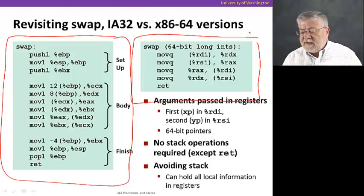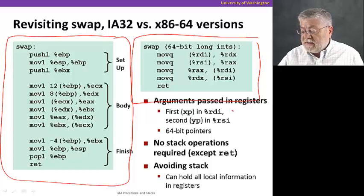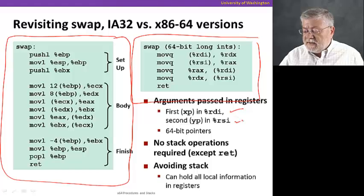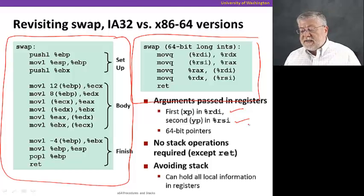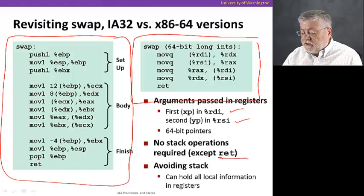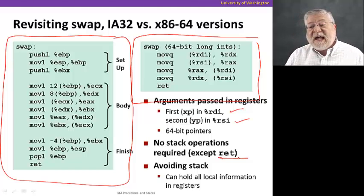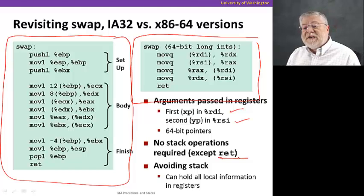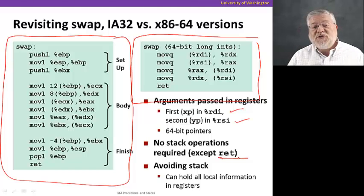The differences in these two cases are that arguments are passed in registers. The first argument is now in the register RDI, the second in the register RSI. That's where we find the 64-bit pointers, those two arguments to swap. We're not having to get them off the stack. The only stack operation we really need is return, that goes and gets the return value from the stack and jumps to that location when we're done. By avoiding the stack and holding all the local information in registers, we can make execution much faster.